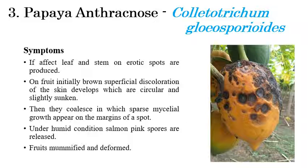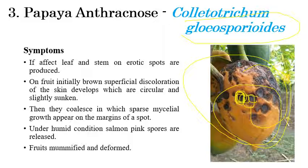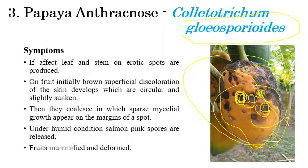The next disease is papaya anthracnose, caused by Colletotrichum gloeosporioides. Symptoms are mainly seen on fruits. Initially, black color circular necrotic spots appear with concentric rings. In later stages, depressed spots are clearly observed along with pink or white color mycelial growth on the depressed regions. Mummification of fruits occurs, making them completely unfit for consumption. Defoliation of leaves can also be observed with the appearance of mycelial growth.